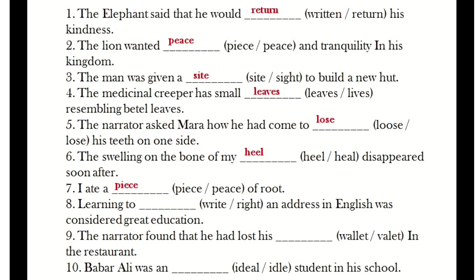Next: 'Learning to dash an address in English was considered great education.' The answer is write, W-R-I-T-E. Then: 'The narrator found that he had lost his dash in the restaurant.' The answer is wallet — 'the narrator gave the restaurant the wallet and the purse.' Next: 'Babar Ali was an dash student in the school.' The answer is ideal.